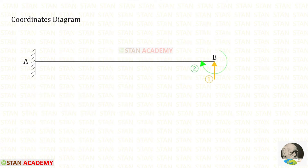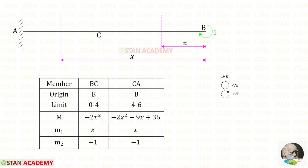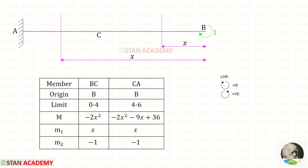Now we are going to find the moment M2. For that, we apply a unit moment at the second coordinate, which is MB, in the clockwise direction. For section BC, the unit moment acts in the clockwise direction, so M2 in BC equals minus 1. For section CA, the unit moment also acts in the clockwise direction, so M2 in CA also equals minus 1.